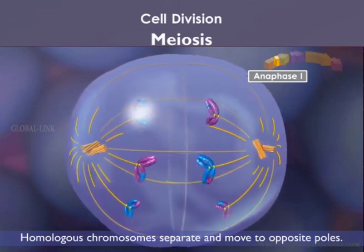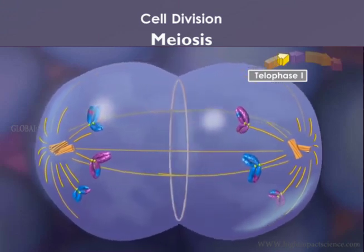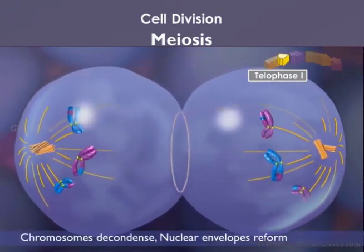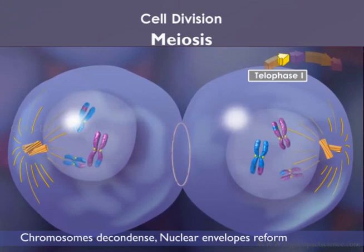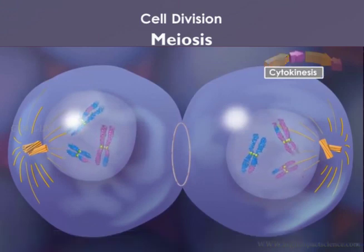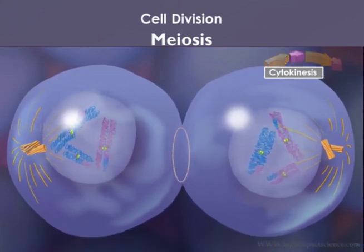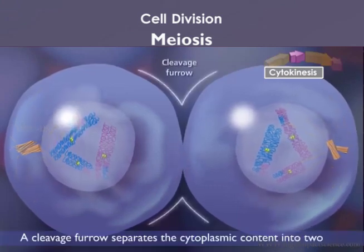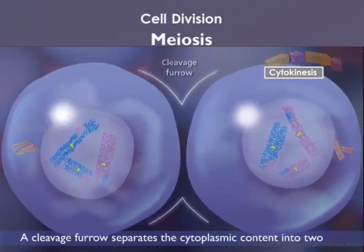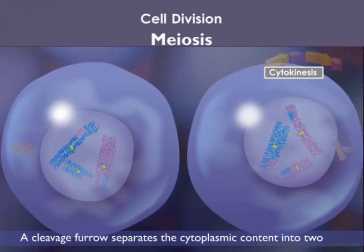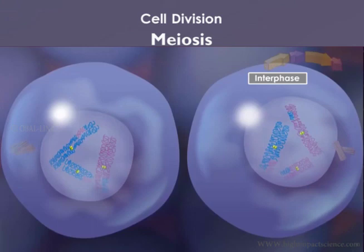Meiosis 1 ends with telophase 1, when the chromosomes decondense and the nuclear envelope reforms. The cytoplasmic material is separated during cytokinesis and a cleavage furrow separates the two daughter cells. The two daughter cells now enter the second meiotic division, or meiosis 2. The cell enters into a short interphase without chromosome replication.